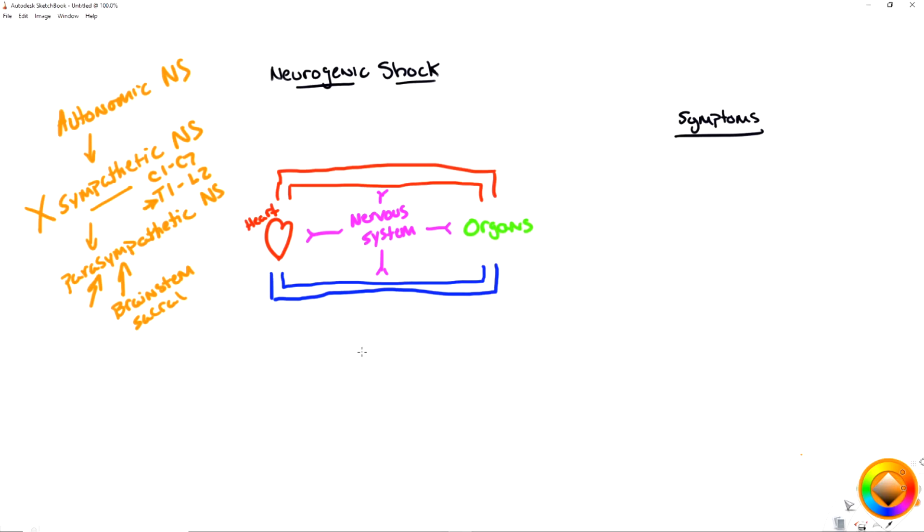So why does the cardiovascular system collapse if you have a nervous system injury in the C1 through C7 area? And what happens is you lose, in that injury, you lose the ability for the nervous system to communicate via the sympathetic nervous system to the rest of the body.